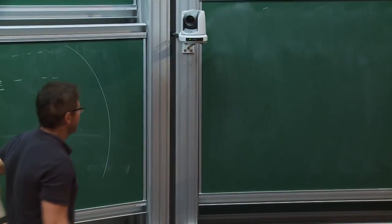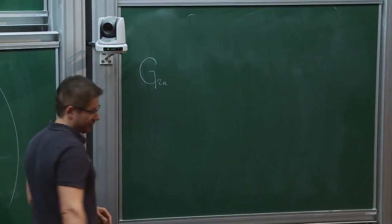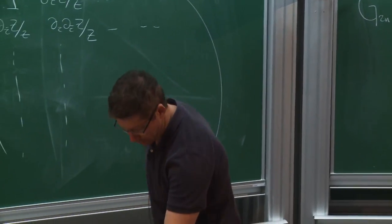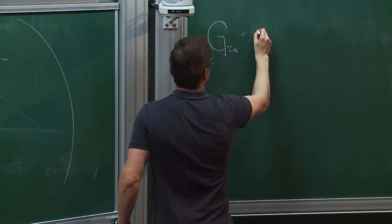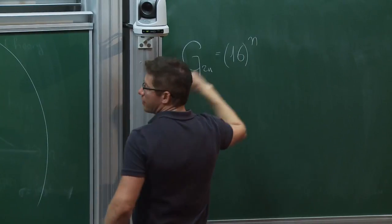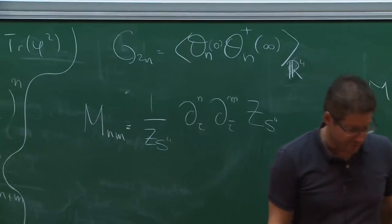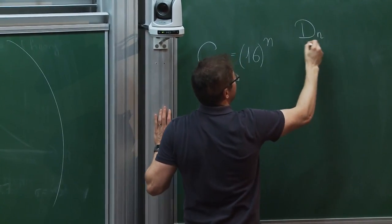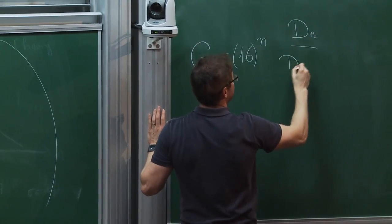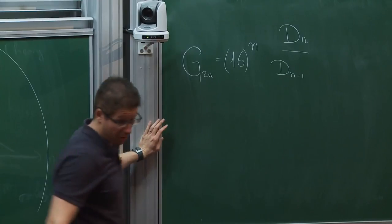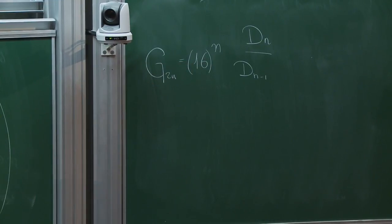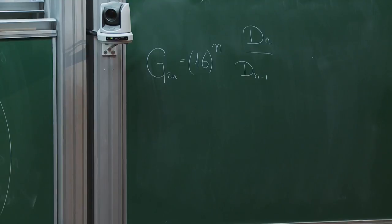The formula is the following: G₂N has a normalization factor in front, generalizing the factor of 16 we had before. What you do is take the determinant of the N×N upper-left block and divide by the determinant of the (N-1)×(N-1) upper-left block. This reduces to the formula for G₂ that we had before. It's a very nice and neat formula.